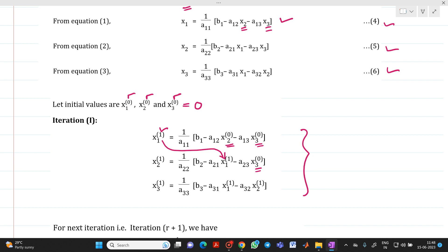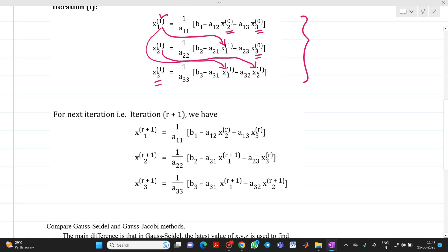x3 of 0 will be as it is. And while calculating x3 of 1 what we have to do? Whatever answer we will get here in the previous equation we have to put it. That is this will be your x1 of 1 and this will be your x2 of 1. So for iteration r plus 1 we are going to write it as here it will be r, r. Here this answer will be substituted here. And for calculating your third we have to substitute whatever values we are getting in equation number 1 and 2.